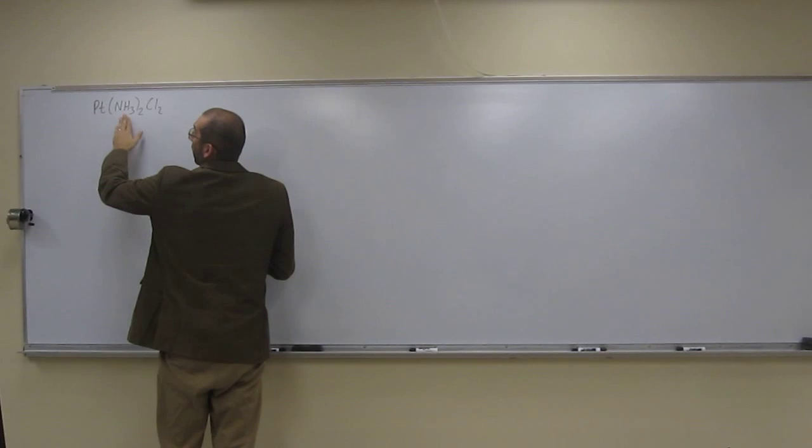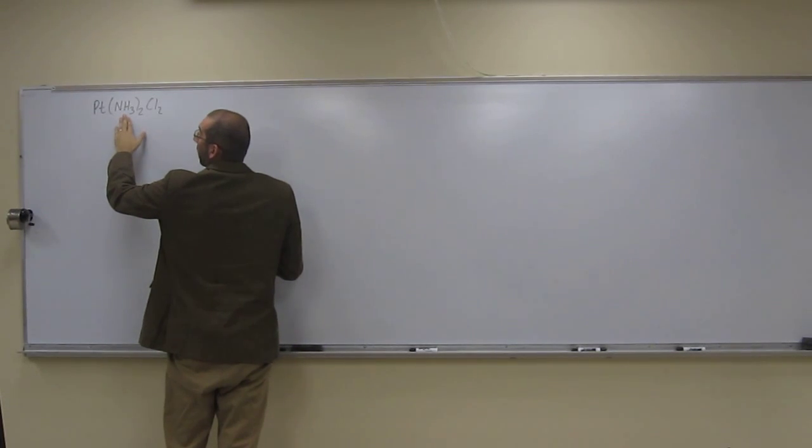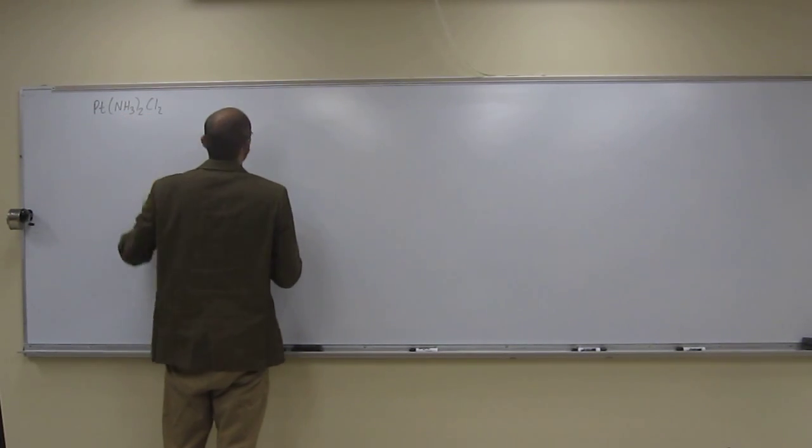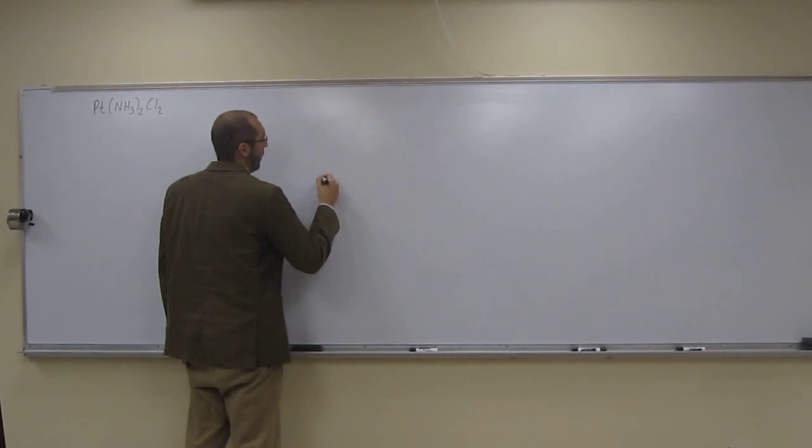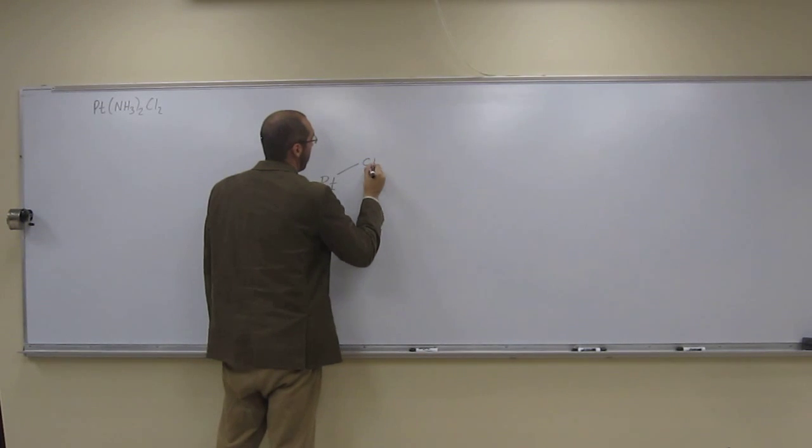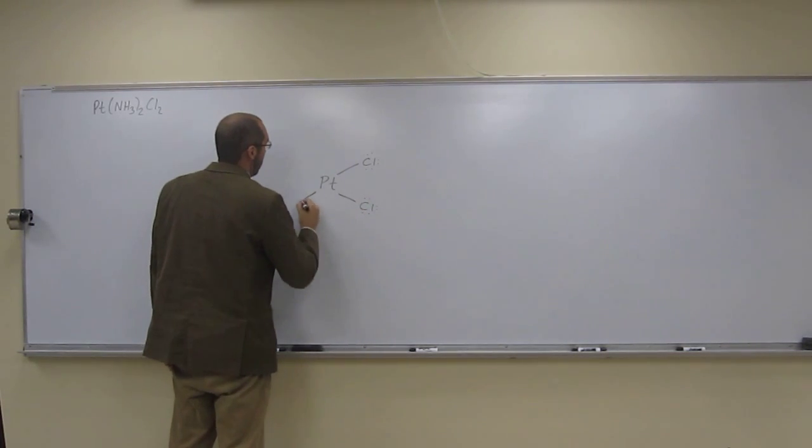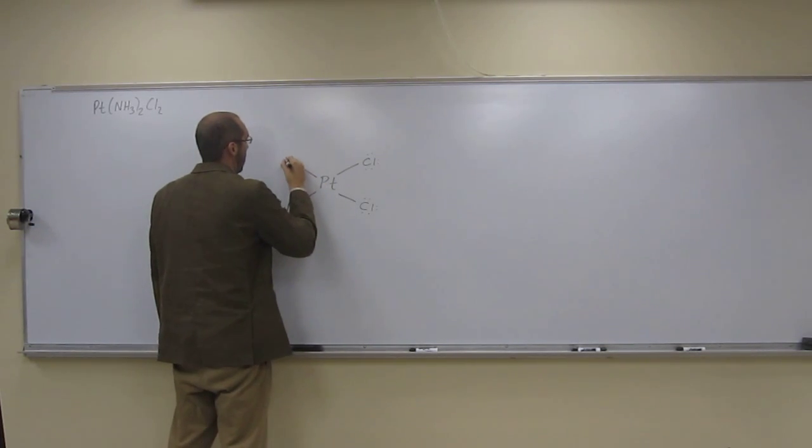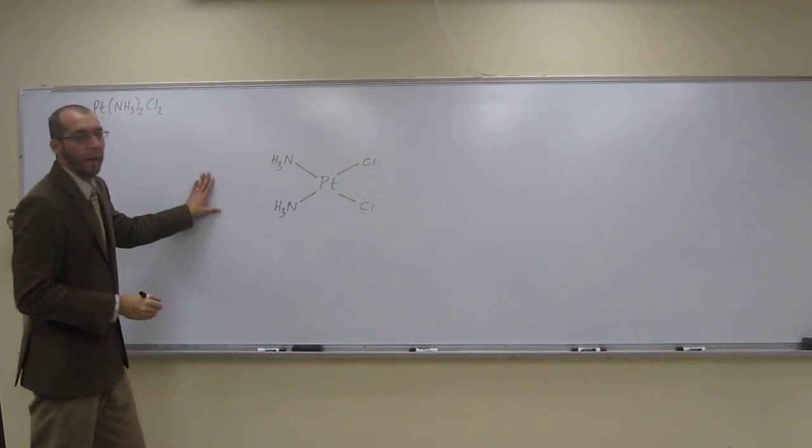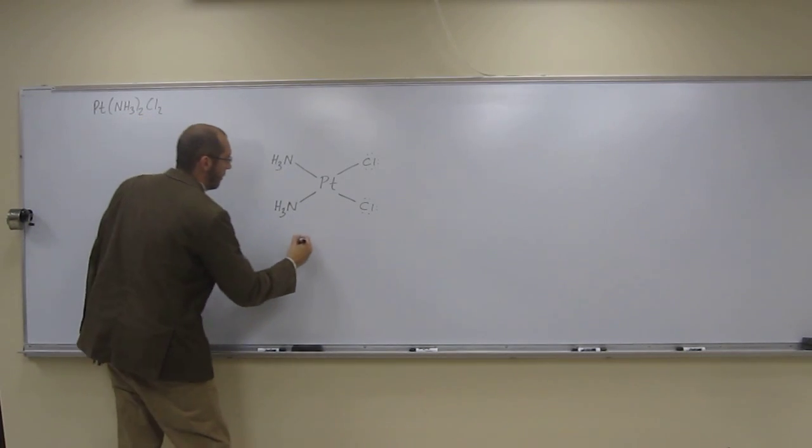Hopefully you can see that because there's two ammonia ligands and two chloro ligands. So the central ion is going to be the platinum. So we can have... So that's one isomer there. That's the cis isomer.